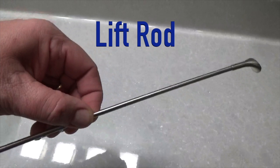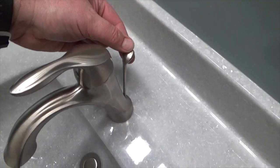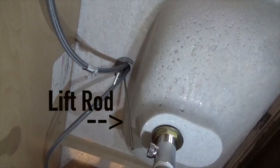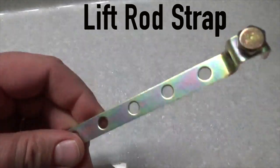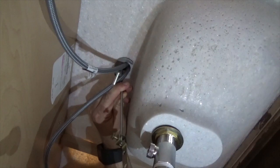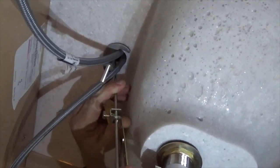Now take the lift rod and insert it into the designated hole through the faucet body. Back under the sink, the lift rod will be inserted into the lift rod strap. Assemble in this manner, about halfway up the rod.